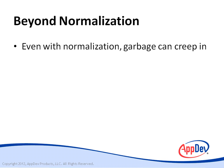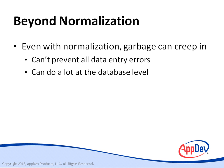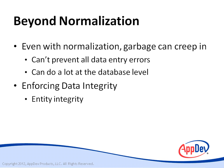Even with fully normalized tables and well-enforced referential integrity, garbage can creep into your database in plenty of other ways. You can't prevent all data entry errors, but you can do a lot at the database level to increase the chances that invalid data will be rejected. Relational theorists have formulated distinct categories of integrity: the uniqueness of each tuple is generally considered a form of entity integrity; restricting an attribute to only dates is an example of domain integrity; and creating relationships between primary and foreign keys enforces referential integrity.